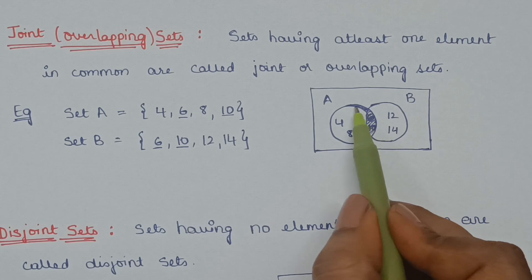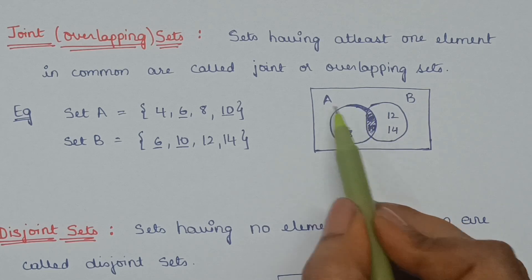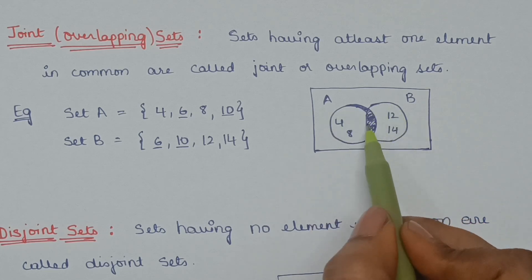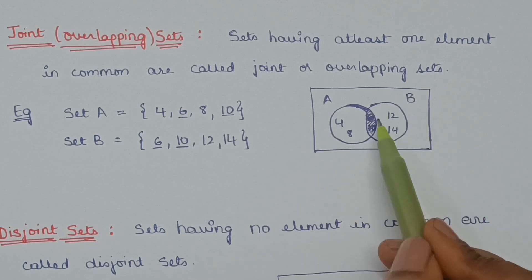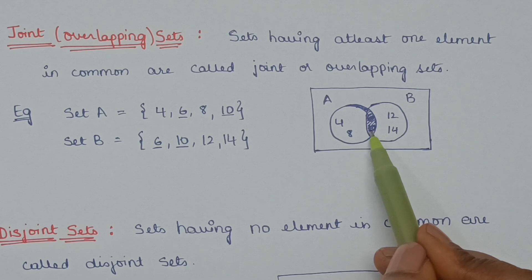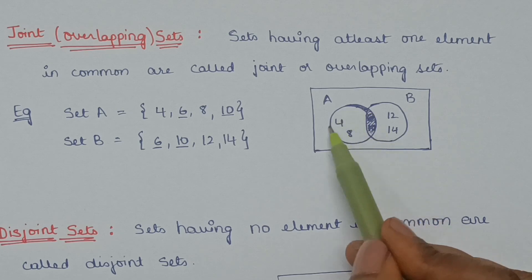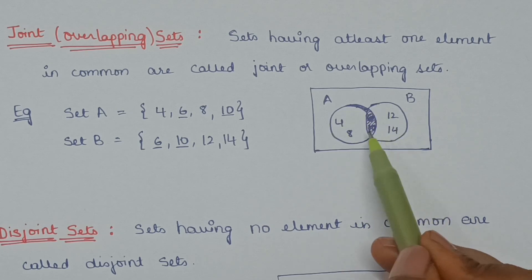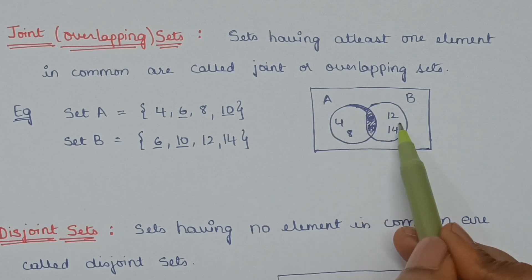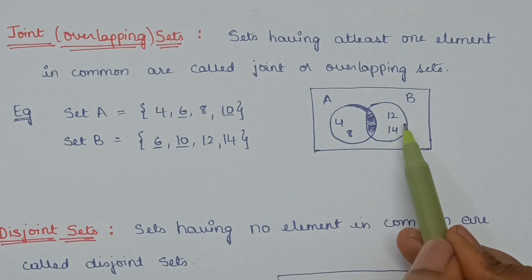This circle is set A and this circle is set B. 6 and 10 are in set A and also in set B, so these two sets are overlapping sets.